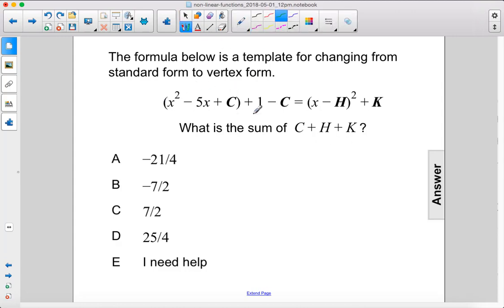We need to complete the square here first. We have x squared minus 5x plus our mystery completing the square constant, plus 1 minus that same mystery constant.